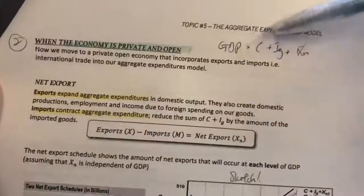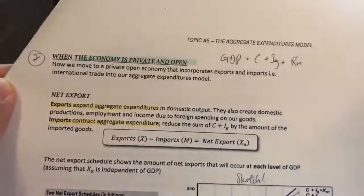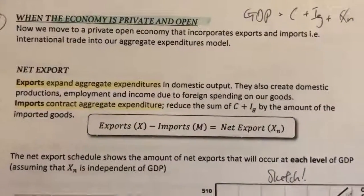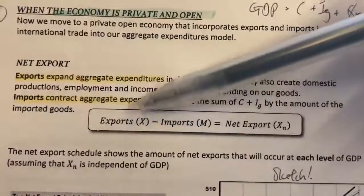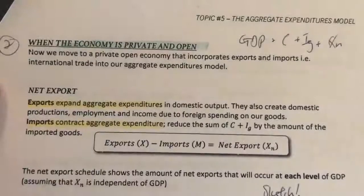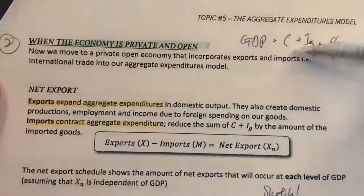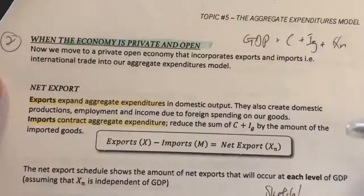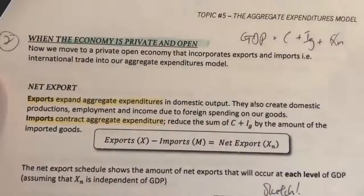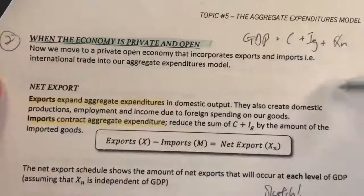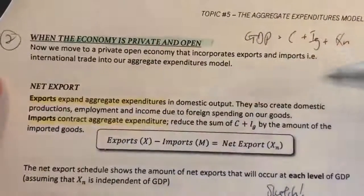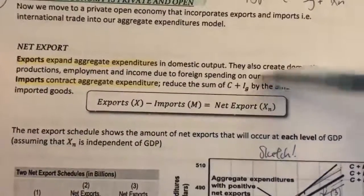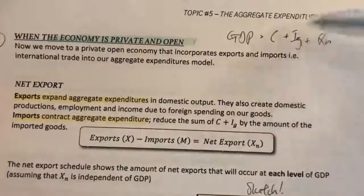Our GDP equation now becomes C plus IG plus XN. XN is net export, which means total exports minus total imports. We add exports into our GDP equation because exports create domestic production — anything that increases production in Malaysia is included in our GDP. When we import, we are buying from other countries, so it has nothing to do with our local production. That is why we use net exports in the GDP equation.